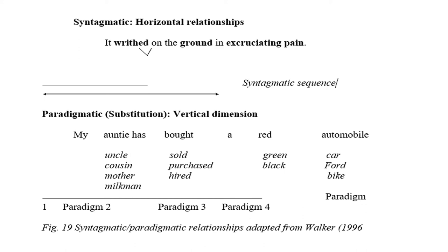So in paradigm 1: 'my'; Paradigm 2 (noun): 'auntie / uncle / cousin / mother / woman'; Paradigm 3 (verb, past tense): 'bought / sold / hired / purchased'; Paradigm 4 (adjective): 'red / green / black'; Paradigm 5 (noun): 'automobile / car.' These illustrate how items within each paradigm can substitute for each other vertically.